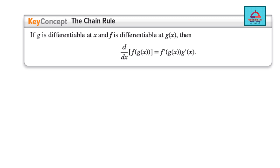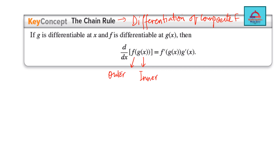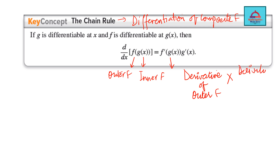Now comes another important rule: chain rule. I've already made a video on it and advise you to watch it for great detail. Chain rule is applied for finding the derivative of a composite function. In a composite function, you have an inner and outer function. To differentiate, you first take the derivative of the outer function, then multiply it by the derivative of the inner function.